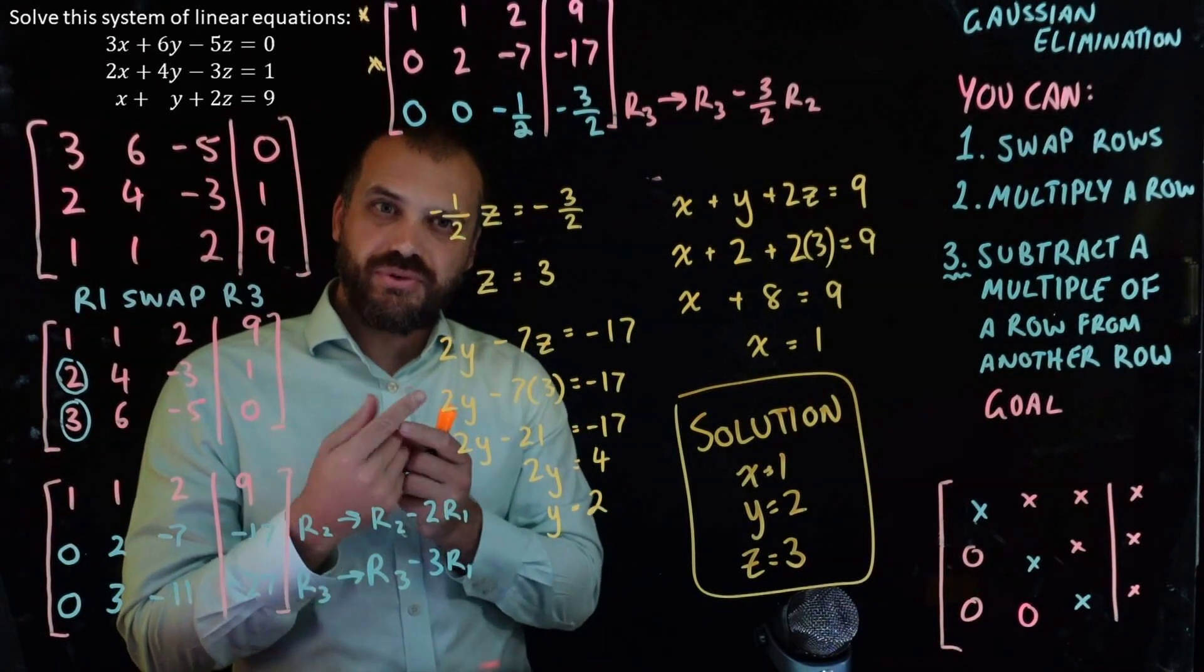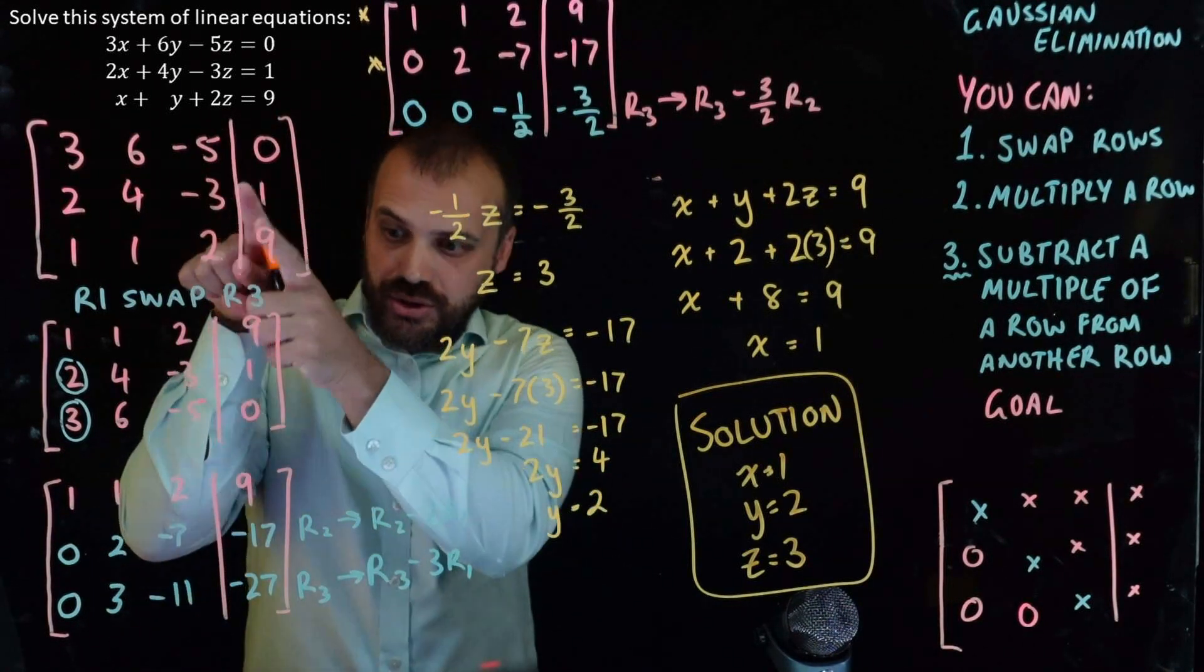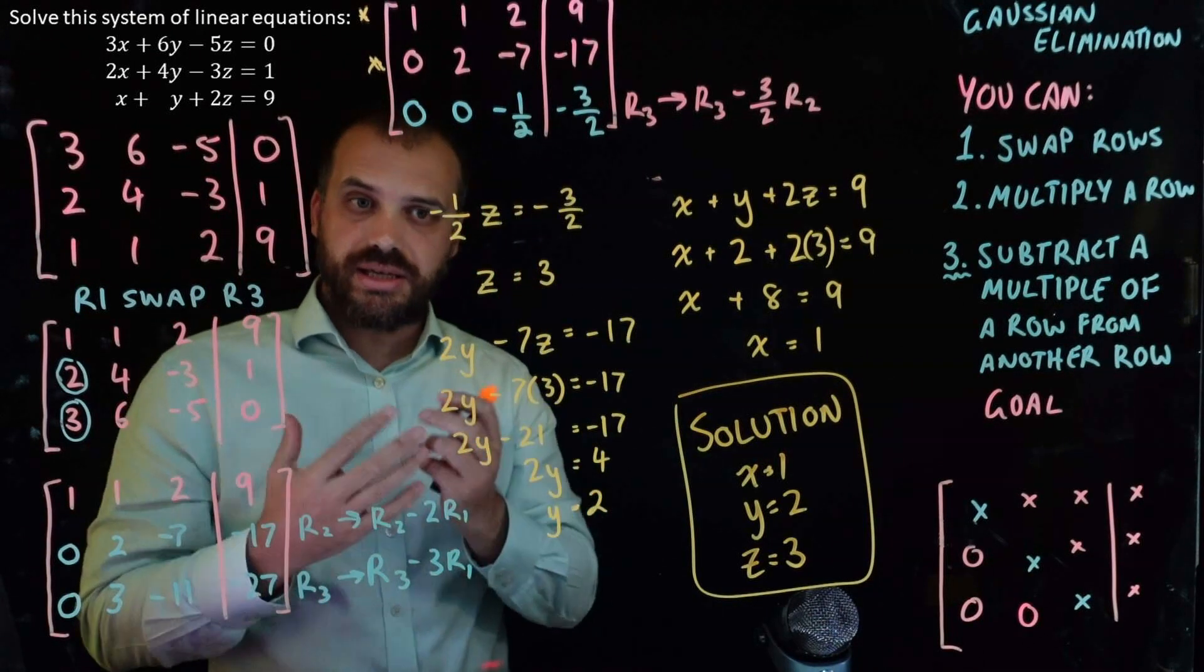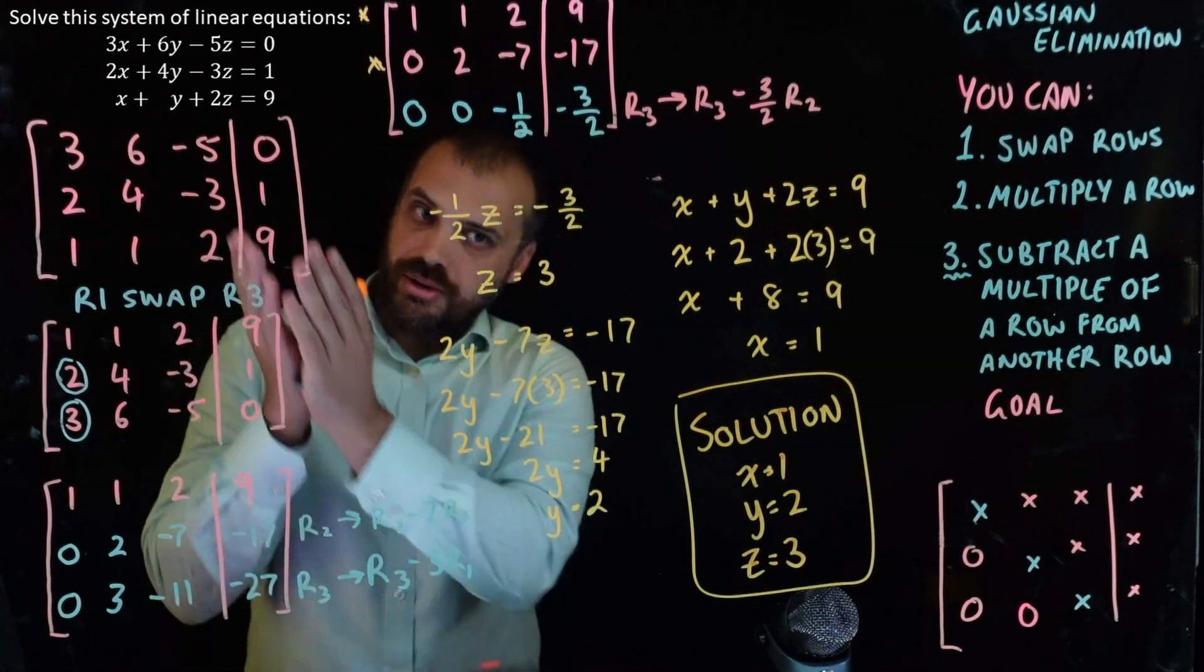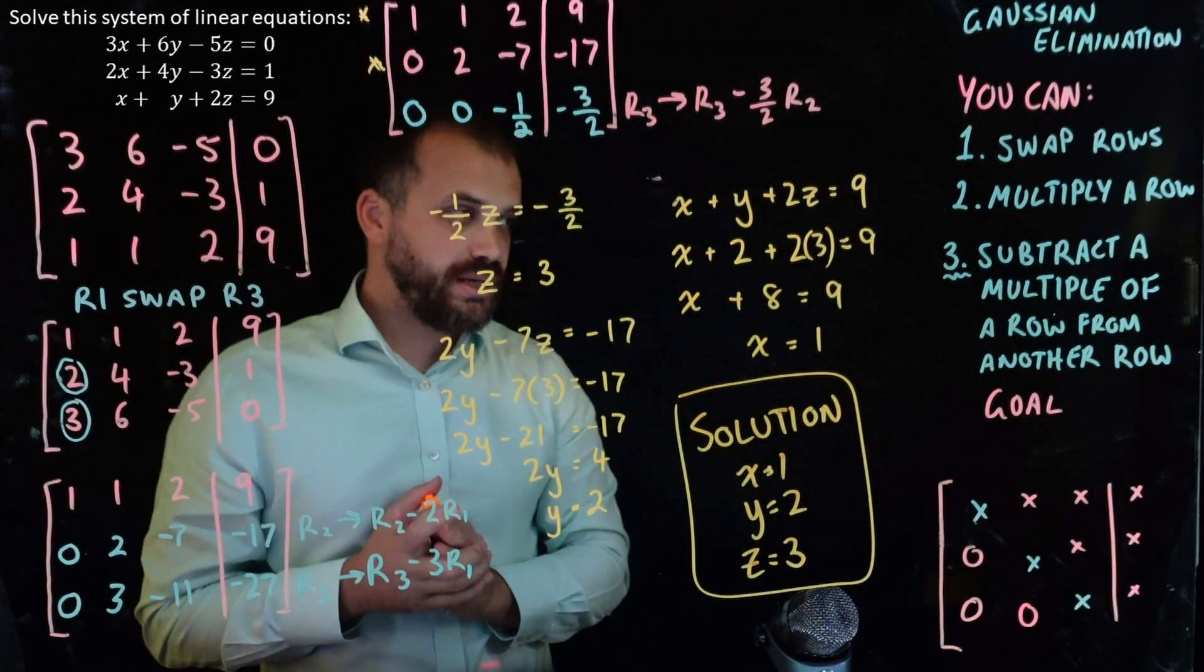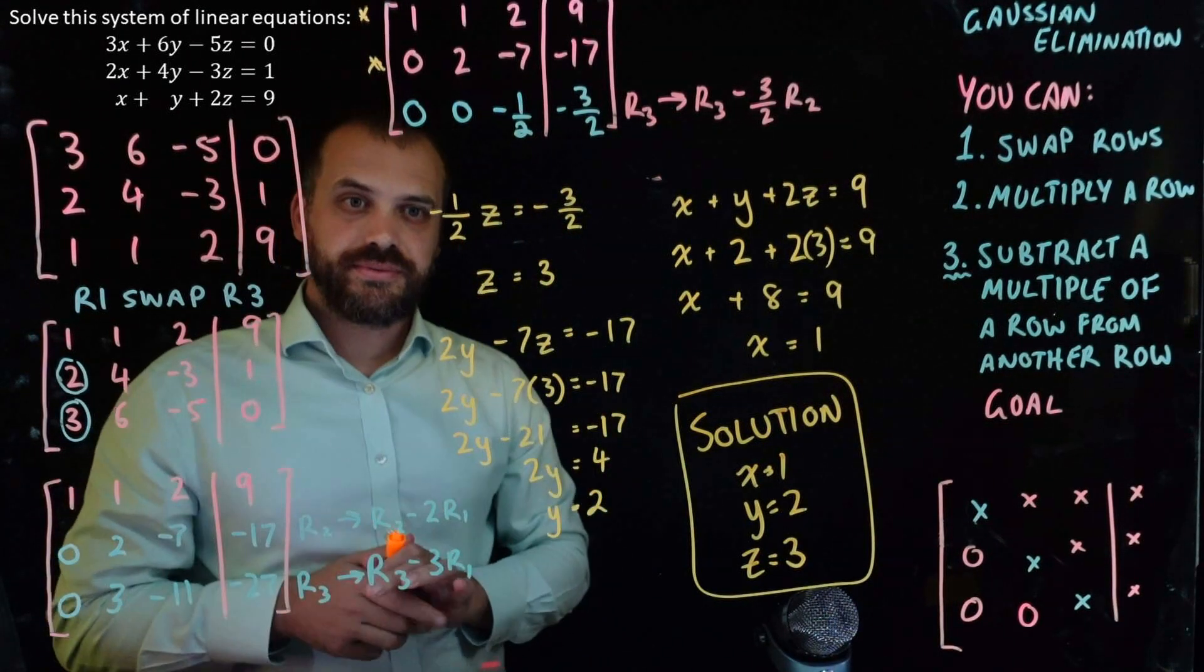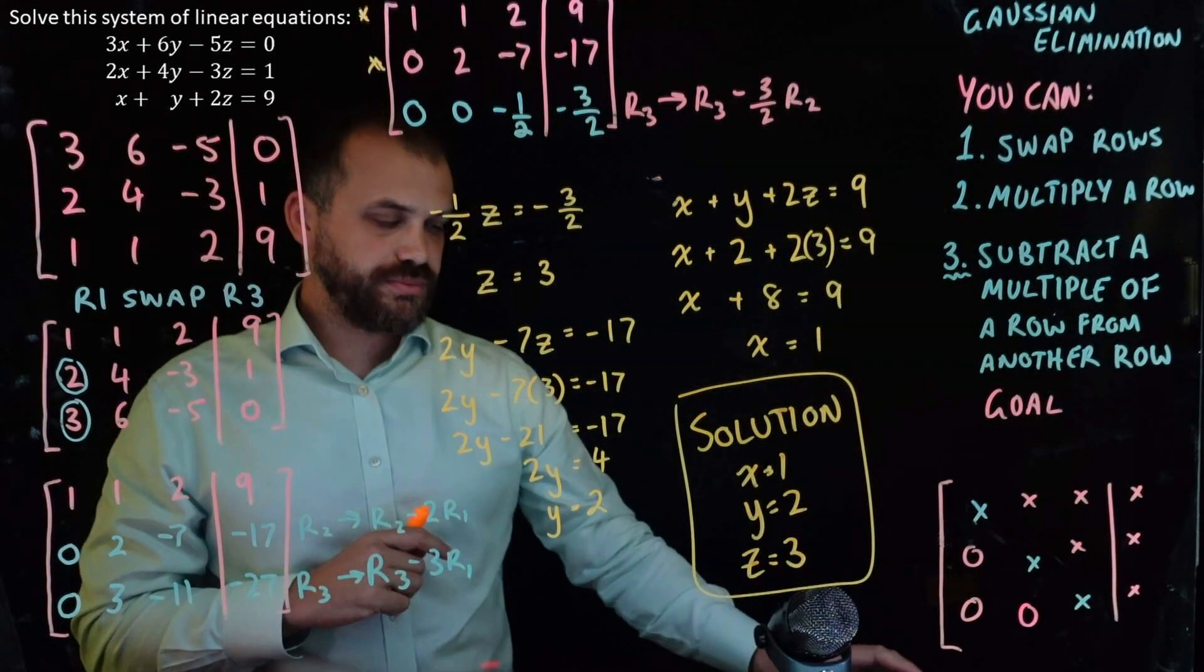Which of course means that if you're given a question like that, and then you go through this painstaking Gaussian elimination process and get a solution, you can always check your solution by putting it back in there. All right, that is Gaussian elimination.